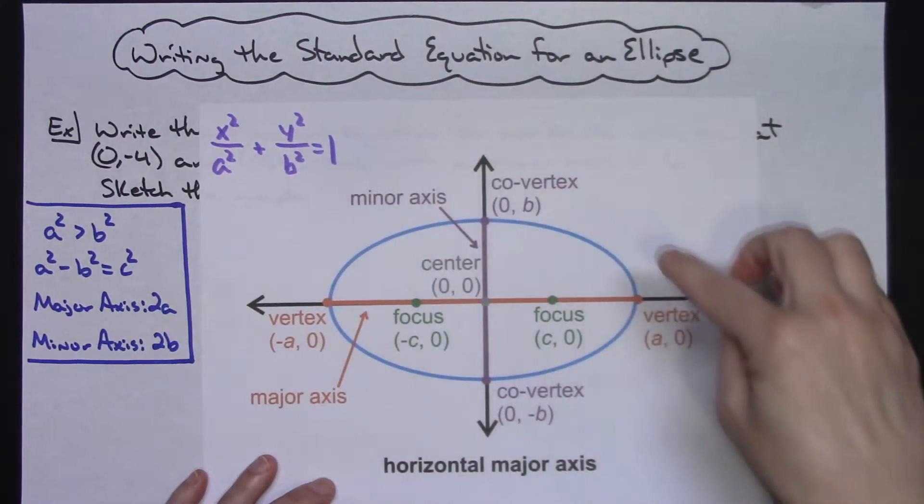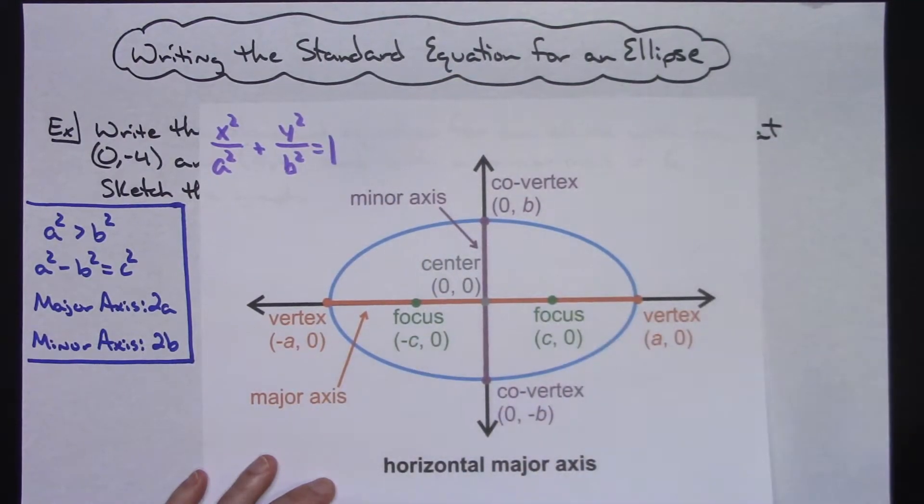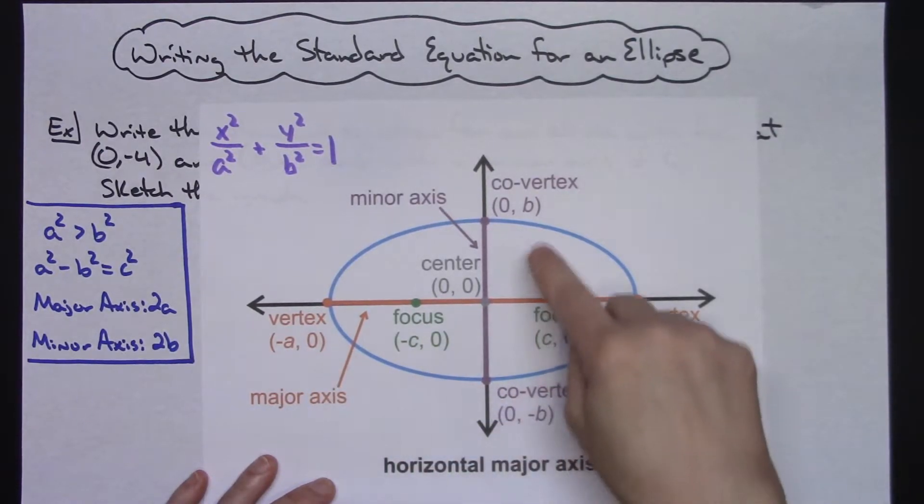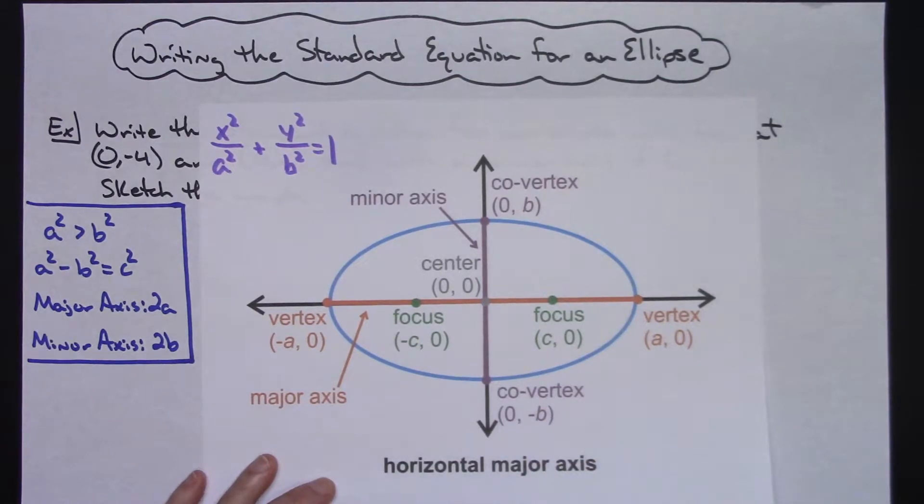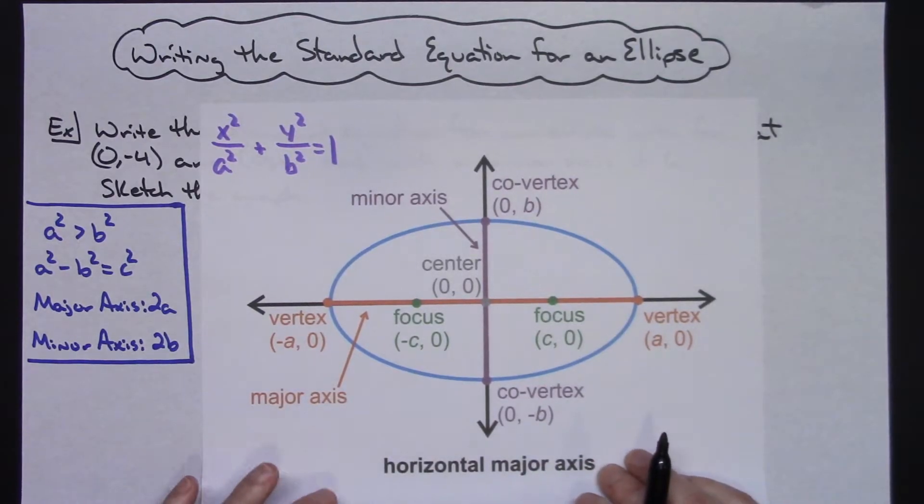I'm going to take the assumption that you've been working with ellipses and so the vocab you already have down pat. You're used to the equations for both the horizontal and the vertical ellipse. You're familiar with your A variables, your C variables for your focus, and your B variables for your co-vertexes as well. If you are not familiar with that, I'd probably take time to pause the video and maybe sketch this.